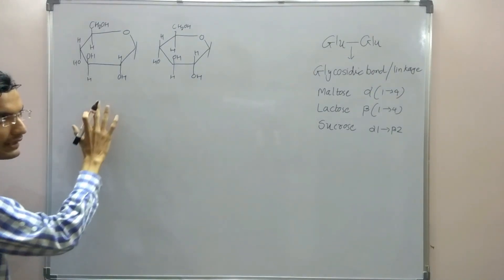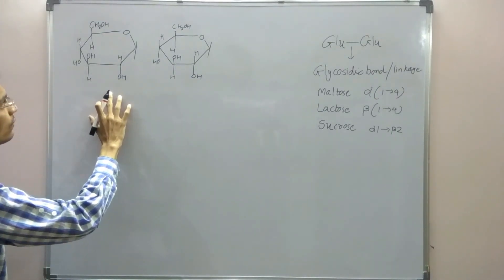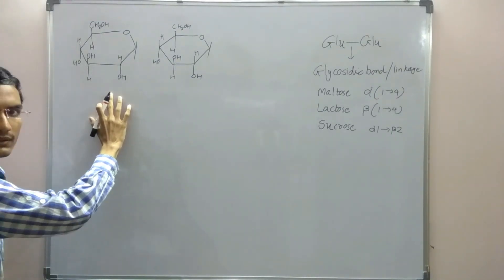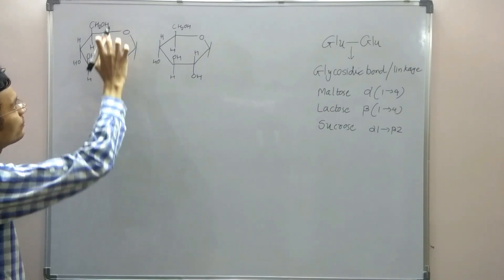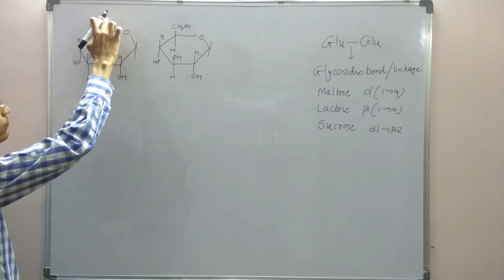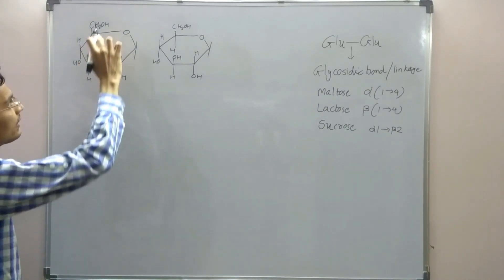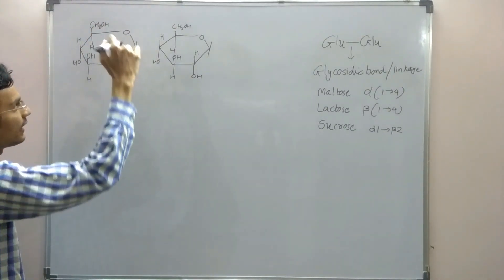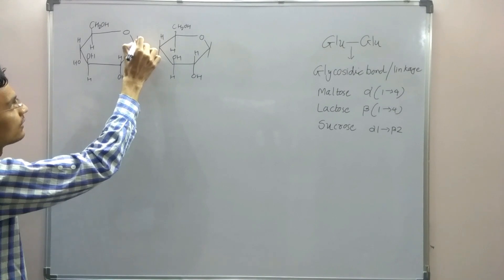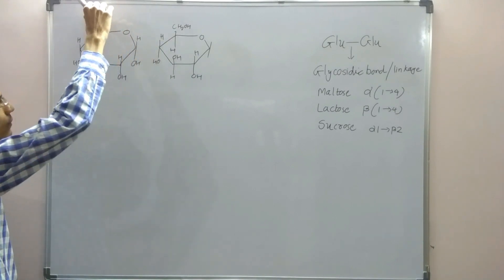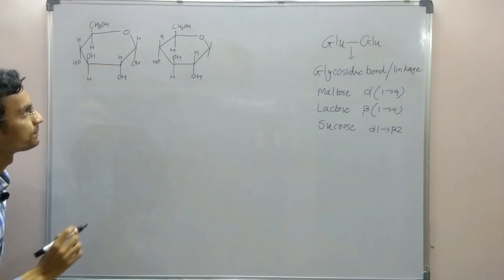When a sugar is in alpha configuration, the position of the OH group is in the opposite direction to the CH2OH group. So the OH will be downward and H will be upward.